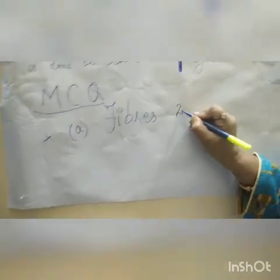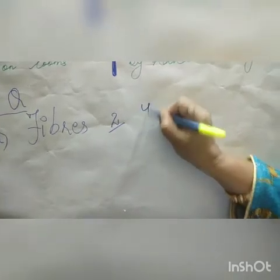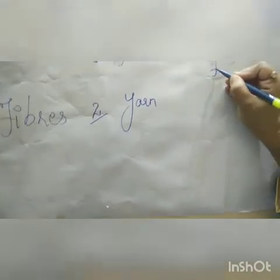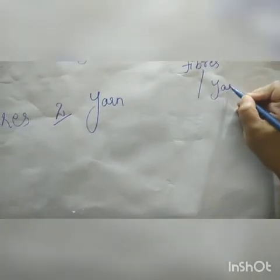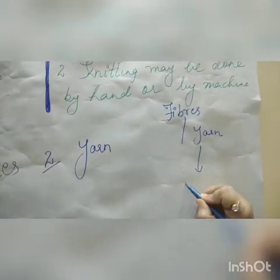The second MCQ: fibers are woven to form — options are fabric, cotton, jute, or yarn. Always remember the schematic diagram we discussed. The correct answer is yarn. Fibers go to yarn first, and then from yarn to fabric.